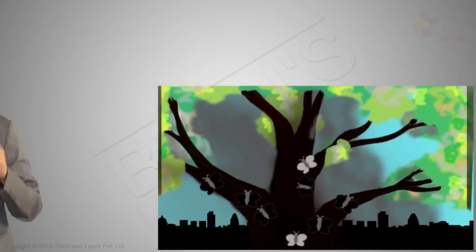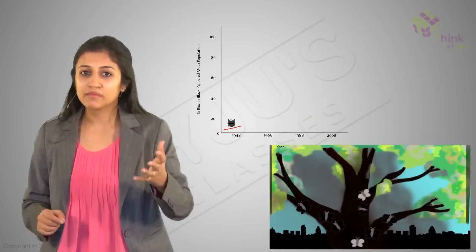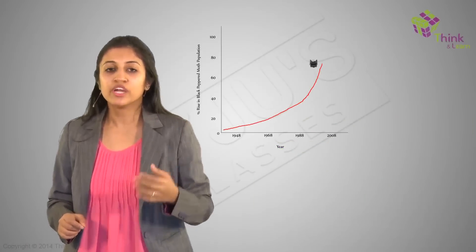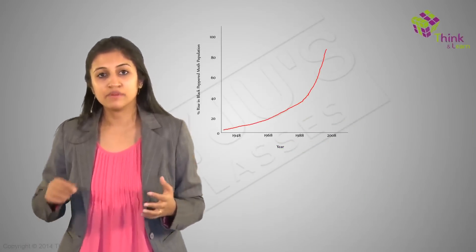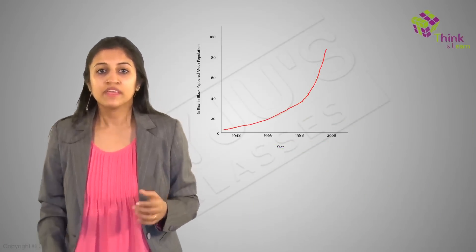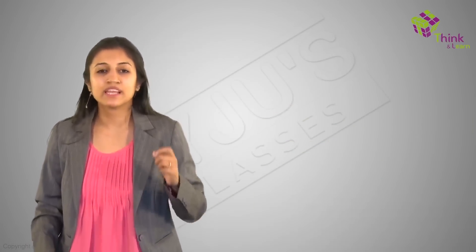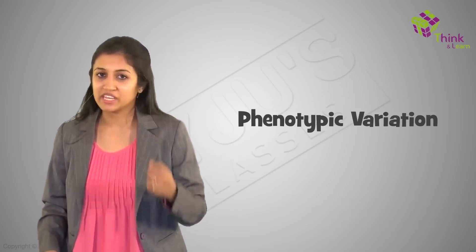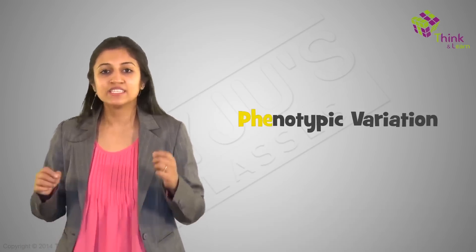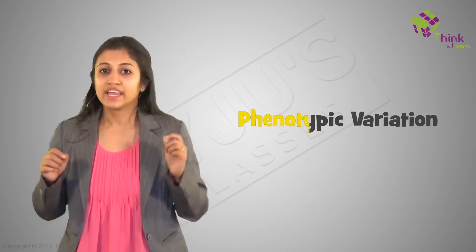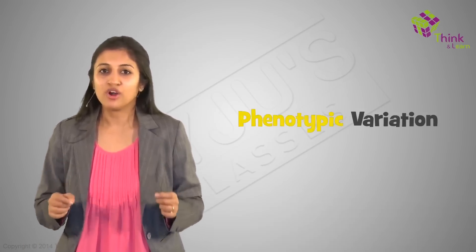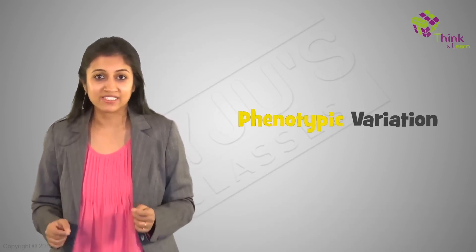Since the lighter-colored moths are no longer camouflaged by the trees, they are more susceptible to becoming dinner for predating birds. The black moths are more well-hidden and reproduce more often because they are eaten less often and have black baby moths. And all of a sudden, there are very, very few moths like Mr. Moth. This, my dear friends, is a typical example of phenotypic variation in a species and evolution through something called natural selection.